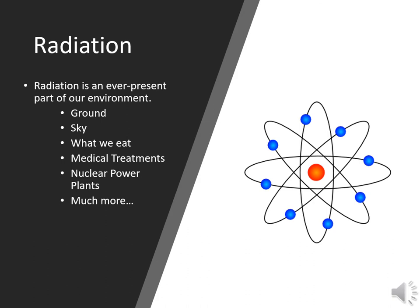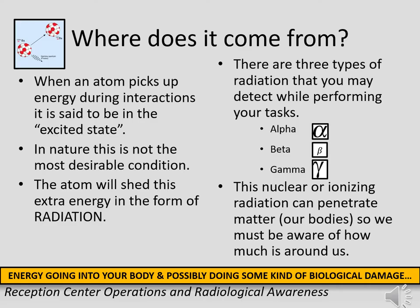Radiation is an ever-present part of our environment and comes from various sources. There are many ways an atom can pick up energy, but in nature this is not the most desirable condition. The atom will want to shed this energy to become stable, and in doing so, it puts off radiation.